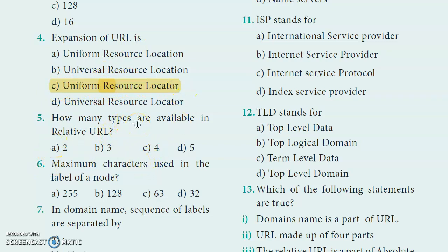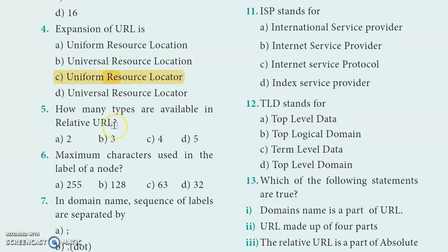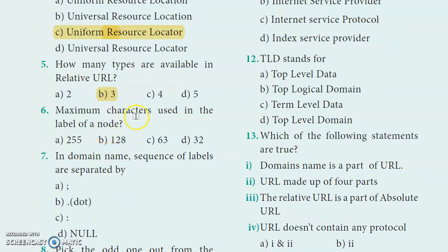How many types are available in URL? If you look at the book, types of URL - there are two types: Relative URL and Absolute URL. However, in a net search for updated options, the answer given is option C.